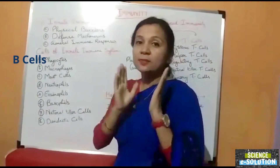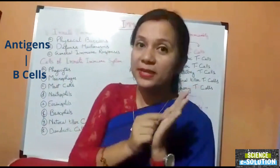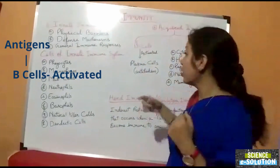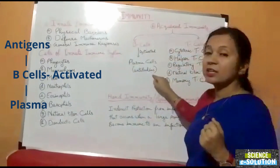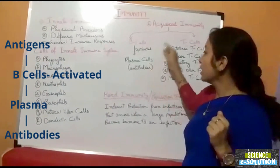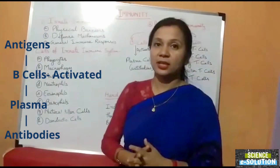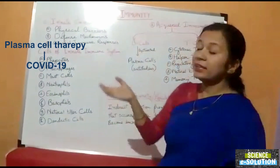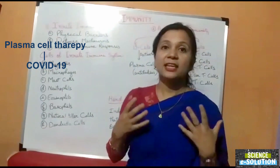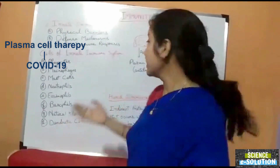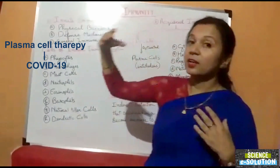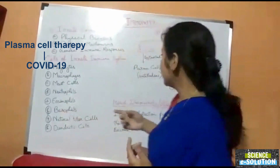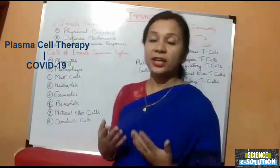When any antigen is encountered by a B cell, the B cell gets activated, multiplies, and forms plasma cells, which secrete antibodies into the blood to help destroy the antigens. You may have heard about plasma cell therapy for COVID-19 treatment. In this treatment, a patient who has already recovered from COVID-19 has a large amount of antibodies in their blood secreted by plasma cells. When these antibodies are infused into a critically ill patient, they can help that patient recover. These clinical trials have been conducted in the UK, US, and India.